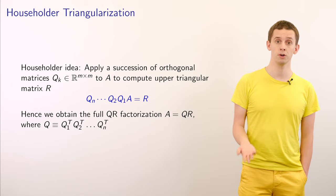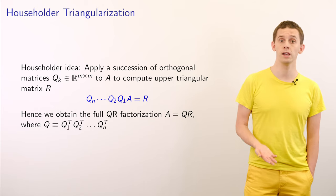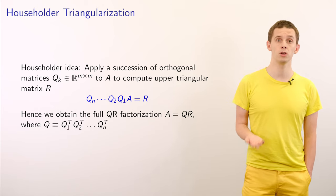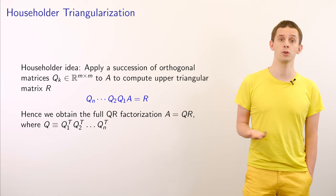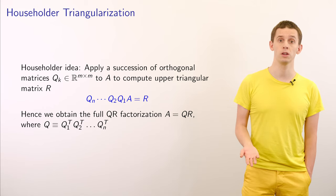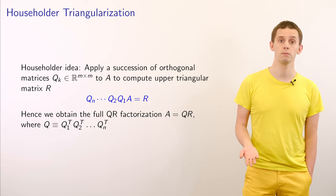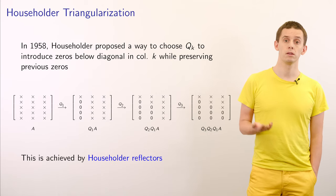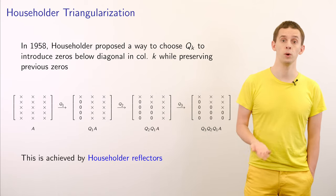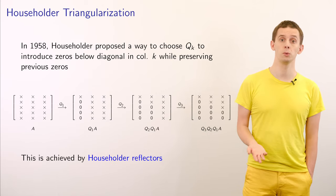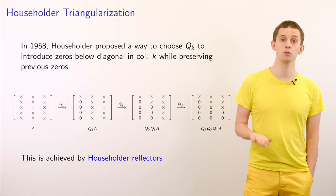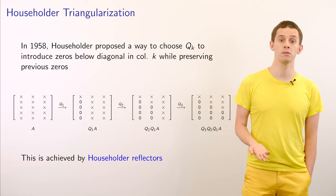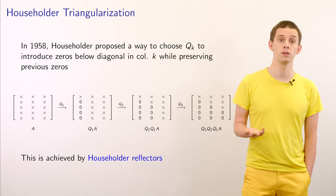From here we can get the full QR factorization — A is equal to QR — where Q is given in terms of Q_1 transpose times Q_2 transpose up to Q_n transpose. In 1958, Householder proposed a way to choose the Q_k to introduce zeros below the diagonal in column K while preserving the previous zeros.